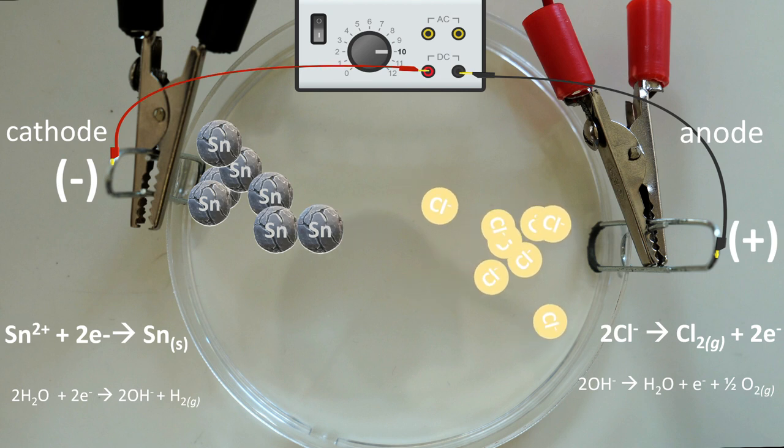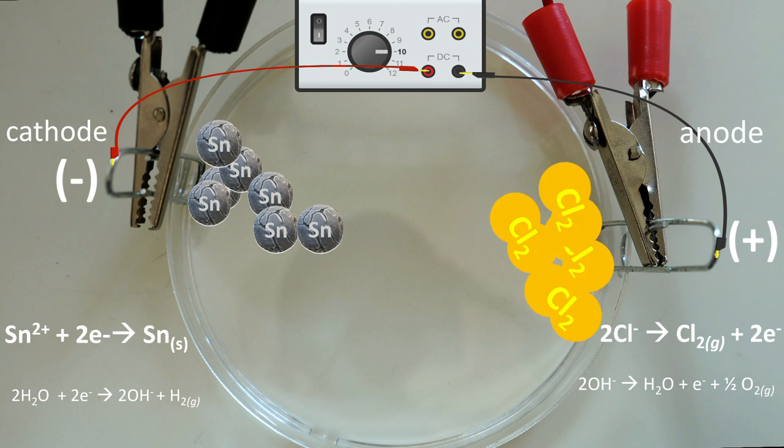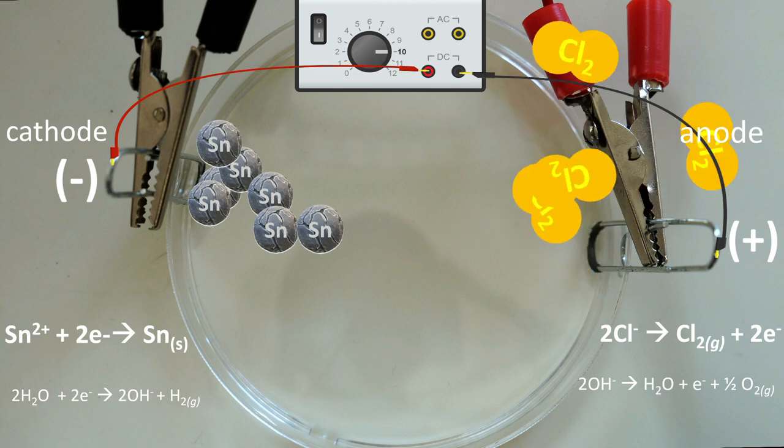At the same time, chloride ions migrate to the anode and release electrons to become chlorine gas. Secondary reactions at the cathode and anode produce hydrogen and oxygen respectively.